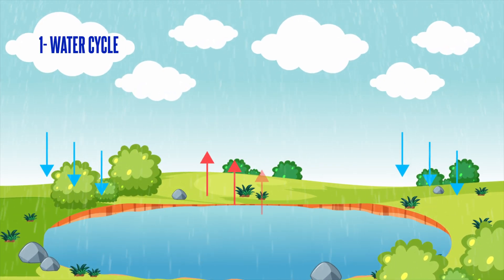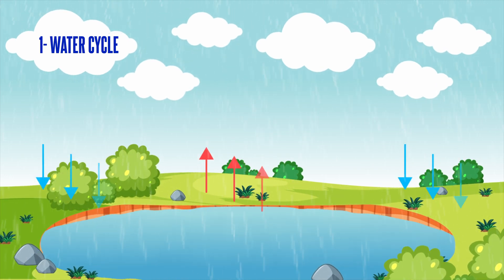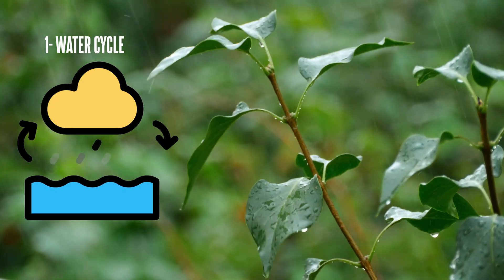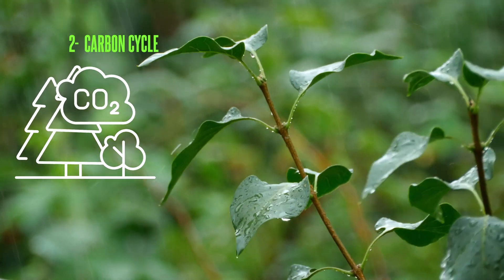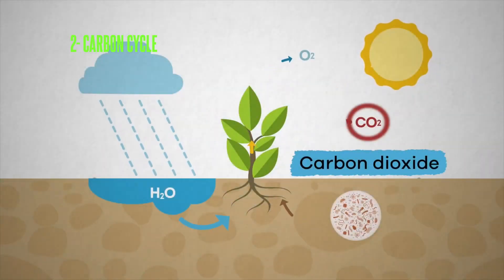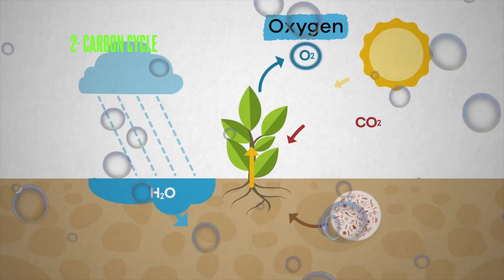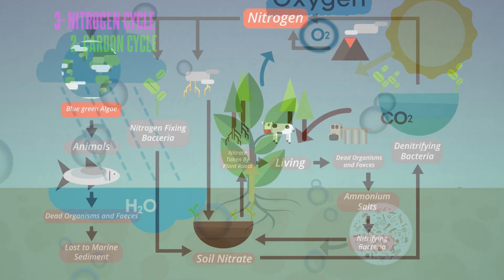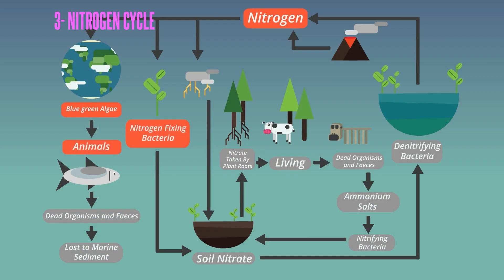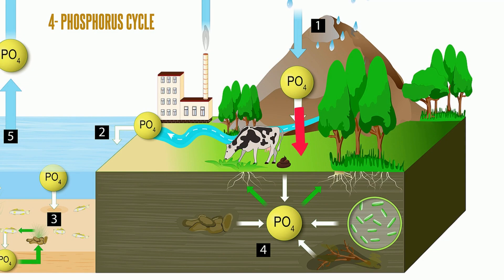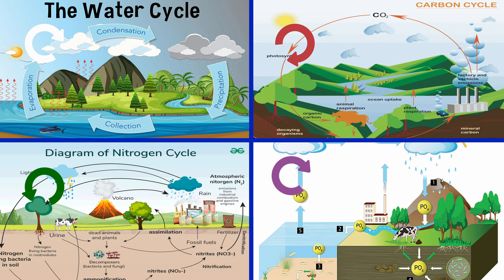The most important one is the water cycle. If water did not evaporate, then be stored in the sky, and then fall as rain, life would not continue. In the carbon cycle, plants take in carbon dioxide through photosynthesis. Living things consume foods containing carbon. Through respiration and decay, carbon is released back into the atmosphere as carbon dioxide. Animals take nitrogen from plants and release it into nature with their waste. Bacteria release nitrogen back into the atmosphere. Phosphorus found in soil and rocks is dissolved by rain, passed on to plants, and then transferred to animals. It returns to the soil with the decay of dead organisms. Life on earth continues with these cycles.